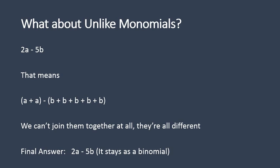With unlike monomials, just like we did in our last one, 2a minus 5b means a plus a minus b plus b plus b plus b plus b — 5b's. You can't join them together. They're different. So it will stay as a binomial, just like we did in the previous lesson. 2a minus 5b is going to remain as a binomial.